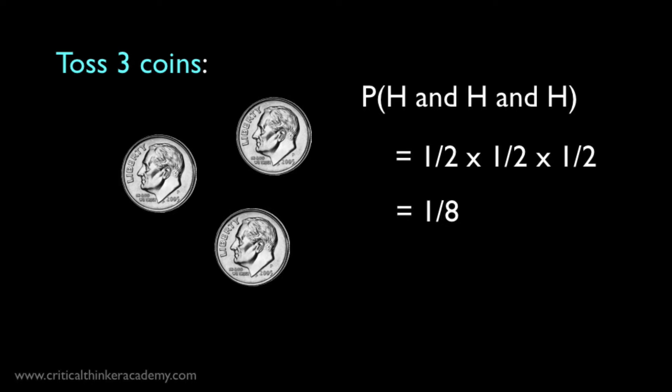If we go for three coins, it's the same idea. We just multiply the probabilities of each individual event, and the answer is half as small again, or one in eight.